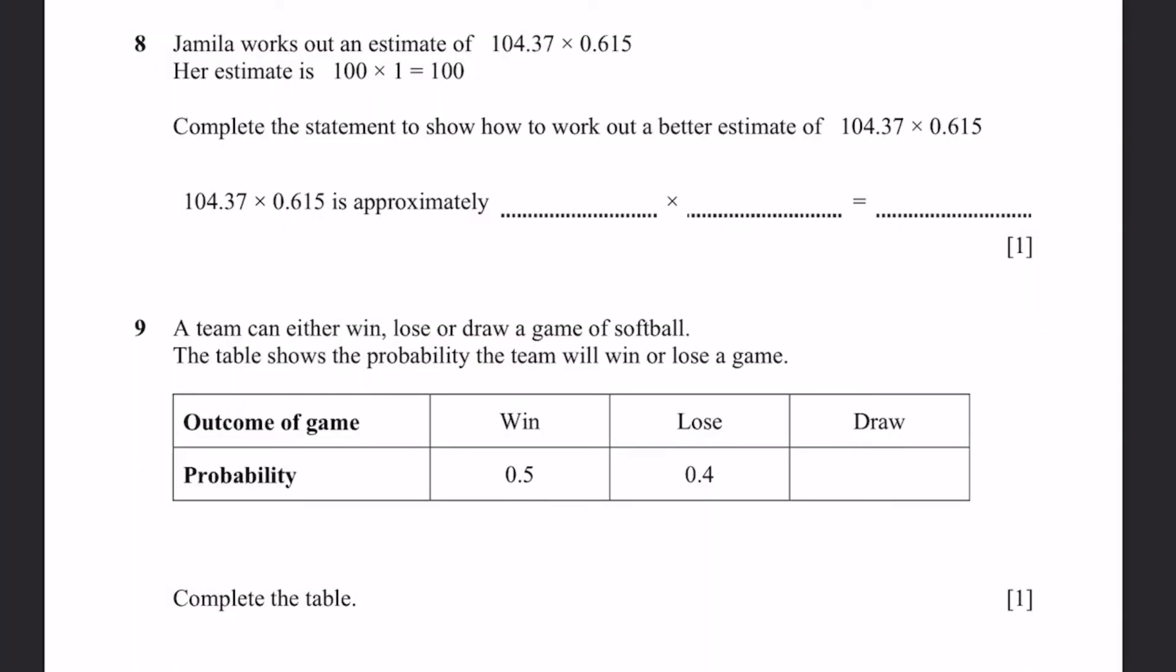Question 8. Jamila works out an estimate of 104.37 times 0.615. Her estimate is 100 times 1 equals 100. Complete the statement to show how to work out a better estimate. Well, estimating 104.37 to 100 is a difference of 4.37 from the original number. Instead of making it 4.37, we can just round to the nearest whole number to make the difference very small, 0.37. So you can write approximately 104 times. Instead of rounding this all the way up to the whole number, we can just round it to one decimal place. That'll make it much less difference. 104 times 0.6. And if you do this, you'll get 62.4.